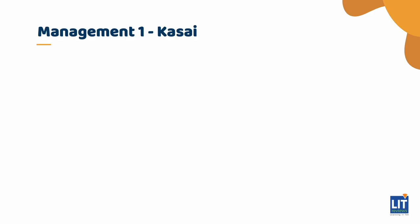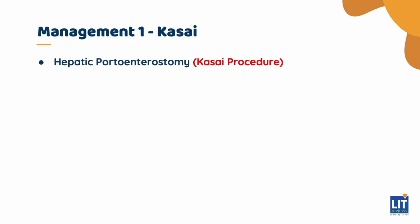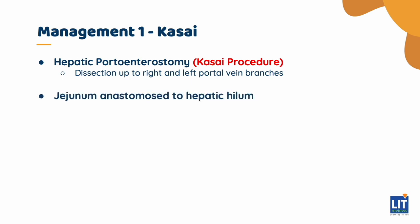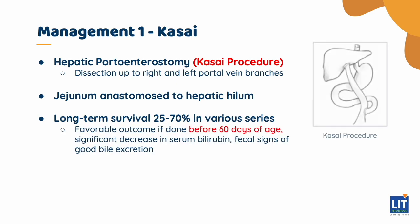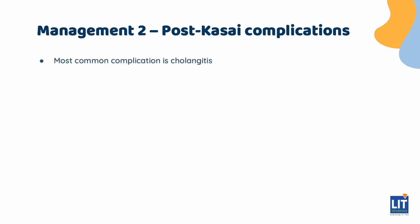One surgical management of the disease is the Kasai procedure, or hepatic portoenterostomy. To perform this procedure, a dissection is taken up to the right and left portal vein branches, and the jejunum is anastomosed to the hepatic hilum. In terms of prognosis, long-term survival is 25-70%. A favourable outcome is demonstrated if the procedure is done before 60 days of age, and if the child has a significant decrease in serum bilirubin and faecal signs of good bile excretion. The most common complication of the Kasai procedure is cholangitis.